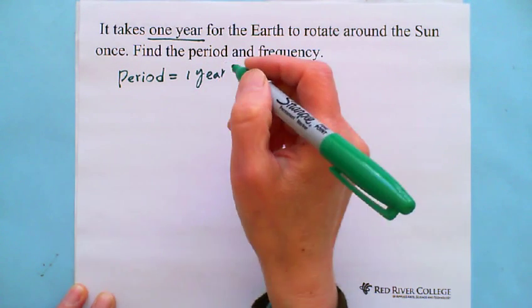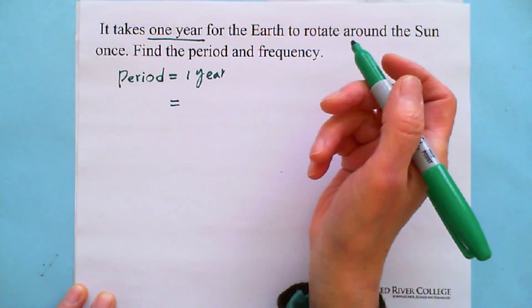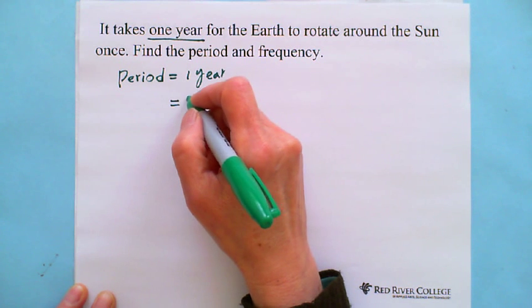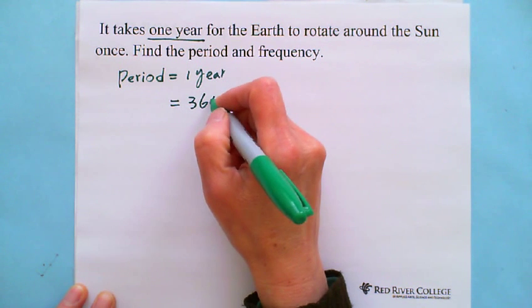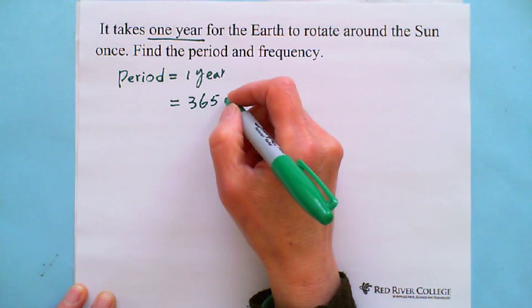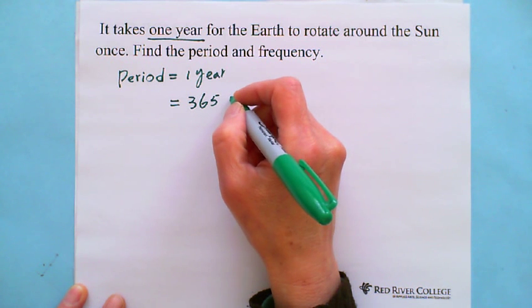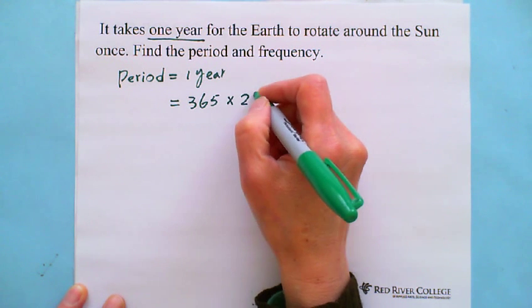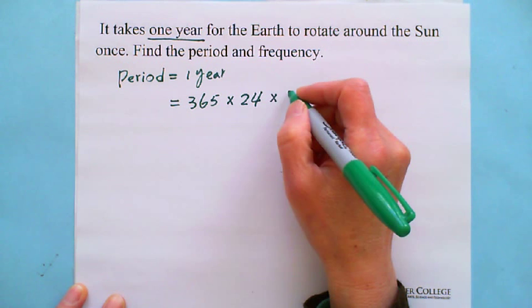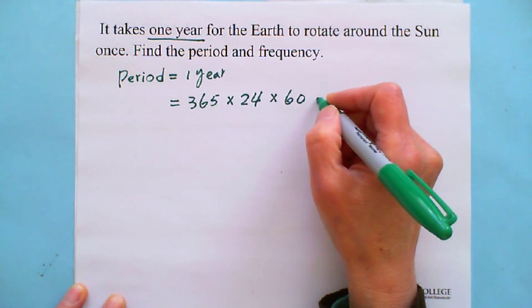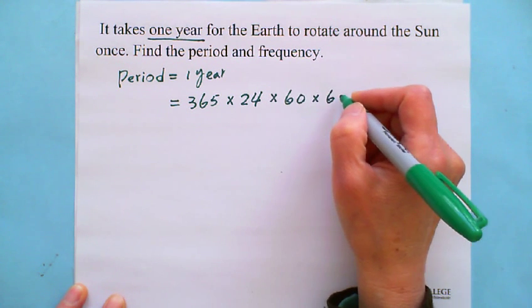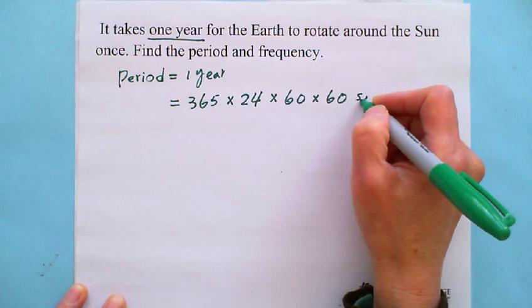We can convert into second. So one year equals 365 days. And one day equals 24 hours. And one hour equals 60 minutes. And one minute equals 60 seconds.